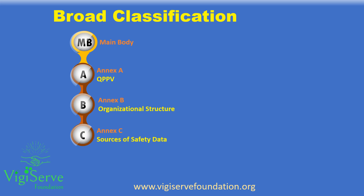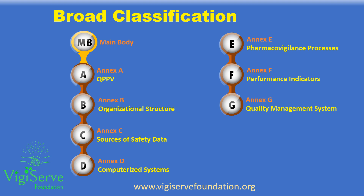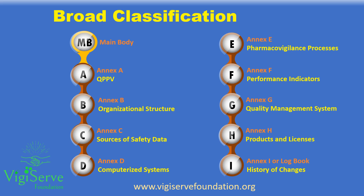Annex C pertains to the sources of safety data. Annex D pertains to the information on computerized systems and databases. Annex E pertains to pharmacovigilance processes, that includes SOPs and working practices. Annex F pertains to the performance indicators, that provide information on the compliance status. Annex G pertains to the quality management system, including audits and inspections. Annex H pertains to the list of authorized products. Annex I, or the logbook, contains the revision history of all versions of the PSMF.